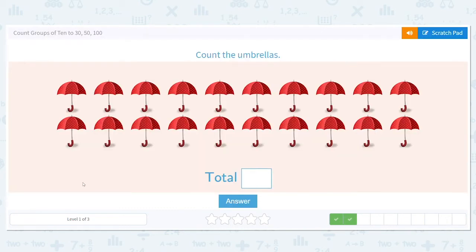Let's try another. This time we have umbrellas. Let's double check to make sure we have 10 in a row. 1, 2, 3, 4, 5, 6, 7, 8, 9, 10.